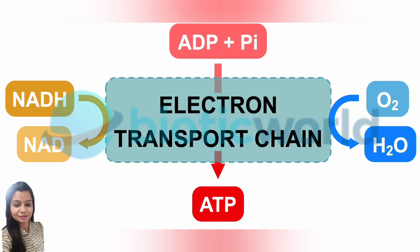The electron transport chain is a marvel of biochemistry. It efficiently converts energy from electrons into a proton gradient that powers ATP synthesis, sustaining all the energy needs of a cell. Understanding this process is crucial for grasping how virtually all aerobic life produces the energy needed to thrive.